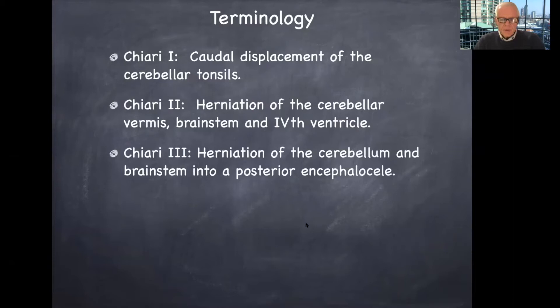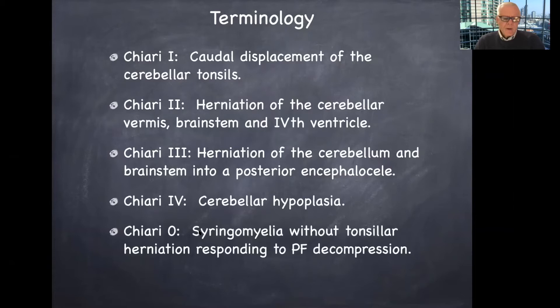There's the Chiari 3 malformation, which is herniation of the cerebellum and the brainstem, typically into an encephalocele, which is an outpouching or hernia of the contents of the brain into a sac posteriorly. And Chiari 4, which is represented by cerebellar hypoplasia.